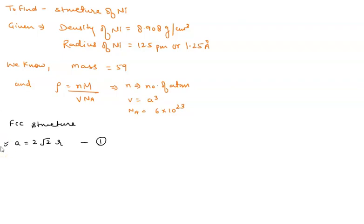So from this equation, we can find out the value of A and again from this formula density is equal to Nm upon Vna. Let us suppose this is equation 2. So from this equation, we can also find out the value of A. If the value of A in both cases 1 and 2 is same, then we can say that this is the FCC structure.